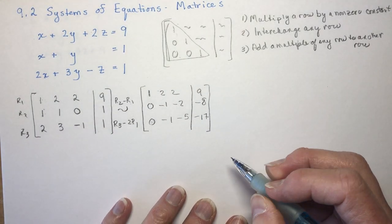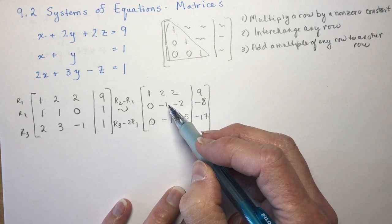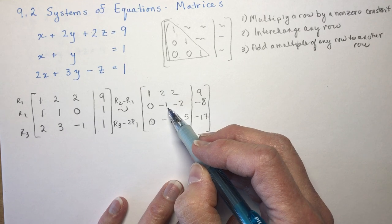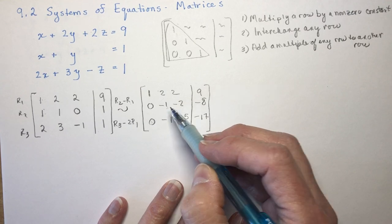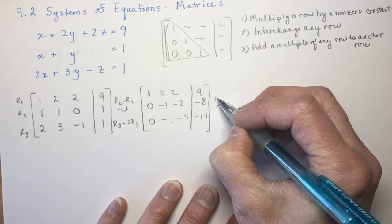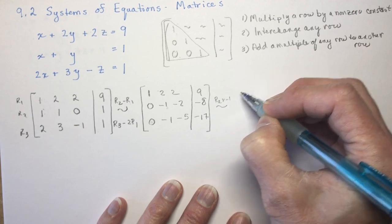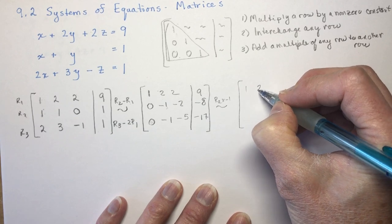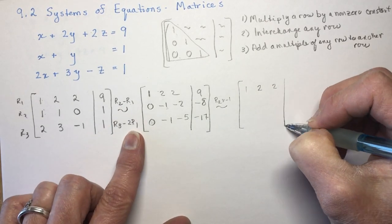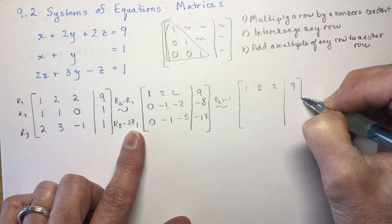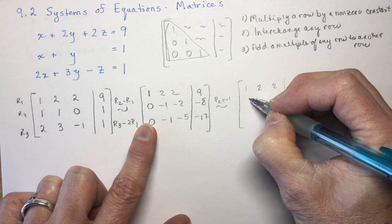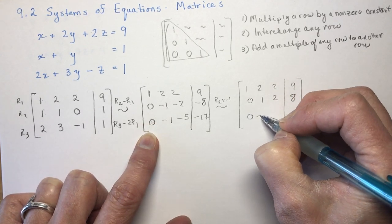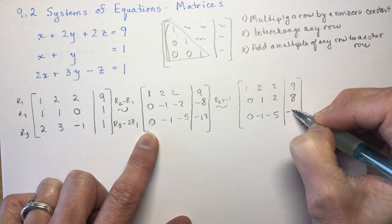Now I want a 1 in the second row's second position. Currently it's minus 1, so I'll multiply Row 2 by minus 1. I can combine this with the previous step. Row 2 times minus 1 gives me: 0, 1, 2, and 8. Row 3 stays as: 0, minus 1, minus 5, minus 17.